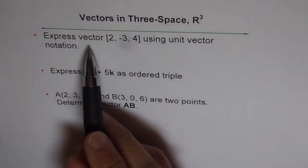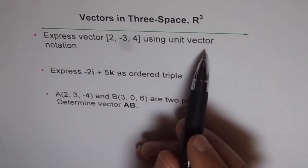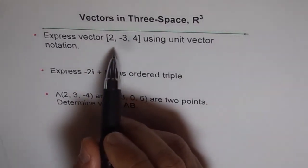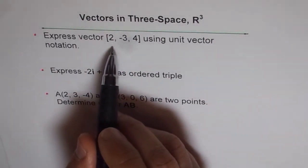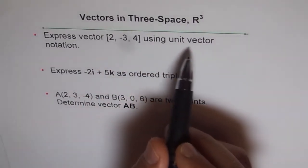Express vector [2, -3, 4] using unit vector notation. We are given an ordered triple here and will translate this vector into a different notation, which is unit vector notation.